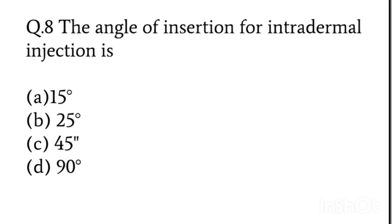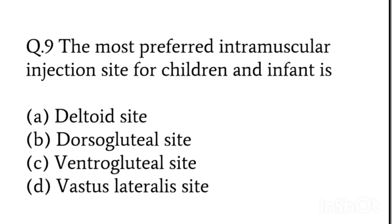The angle of insertion of intradermal injection: 15 degree, 25 degree, 45 degree, or 90 degree. For intradermal injection we have to create a small bleb on the skin — the skin should raise up like a bulb. So at what angle? It is 15 degrees. Answer is 15 degrees.